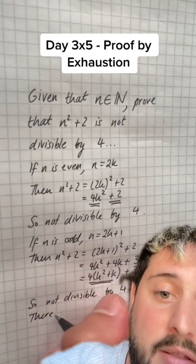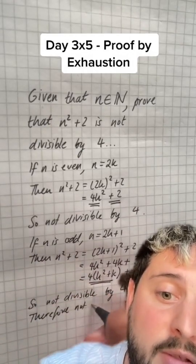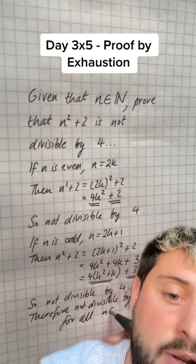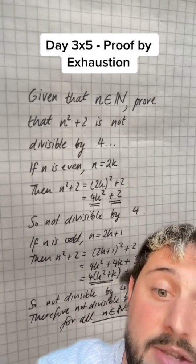Now we need to finish this off by saying because it's not divisible by 4 for the evens or for the odds, therefore it is not divisible by 4 for all members of n that are natural numbers. Remember, those are just the positive integers. And that's it.